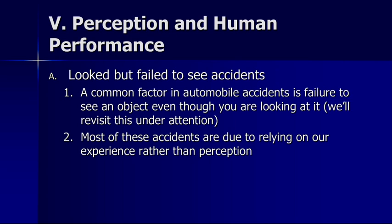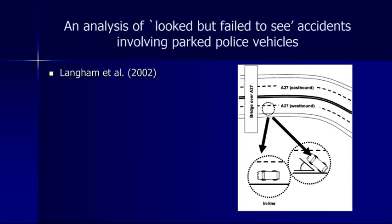This becomes particularly important in the real world, especially in driving. There is a common phenomenon called look-but-fail-to-see accidents. This area is called human factors or human performance because we're talking about how people interact with their environment and the technology they use — in this case, automobiles. A common factor in automobile accidents is failure to see an object even though you're looking right at it. One of the most interesting and tragic examples involves automobiles stopped on the side of the road.